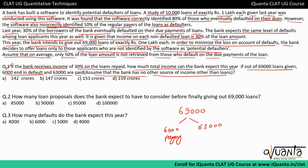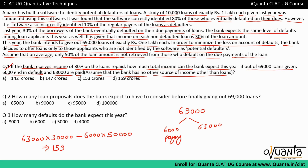Total income from non-defaulters: 63,000 loans × 30% of rupees 1 lakh = 30,000 per loan, giving rupees 189 crores. Loss from defaulters: 6,000 defaulters each pay only 50% of rupees 1 lakh, so the bank loses 50,000 per defaulter — totalling rupees 30 crores in losses. Net income = 189 crores − 30 crores = 159 crores. Option D is the correct answer.